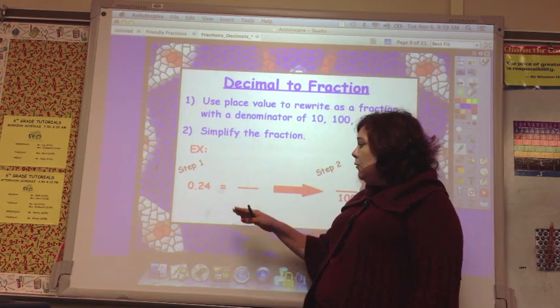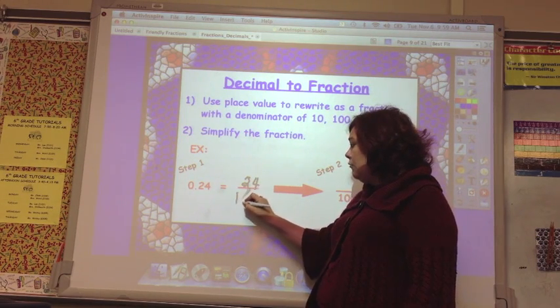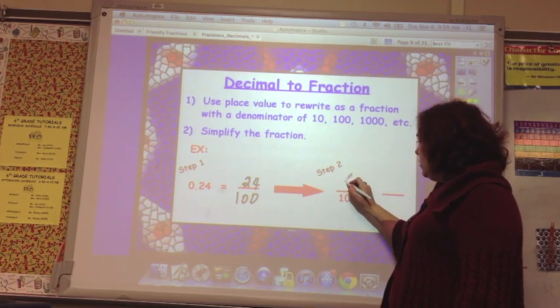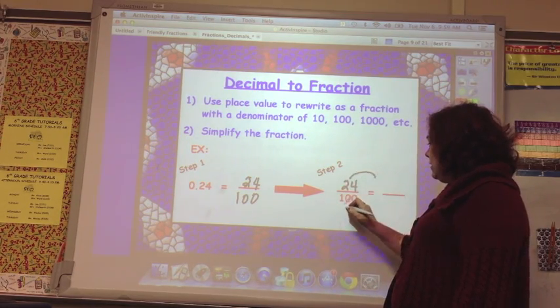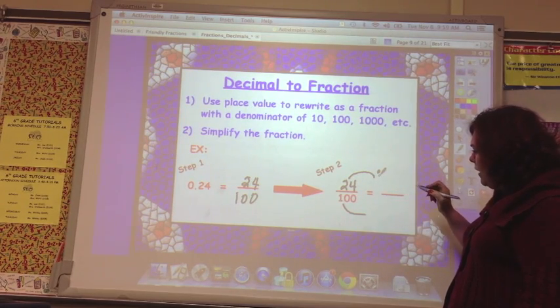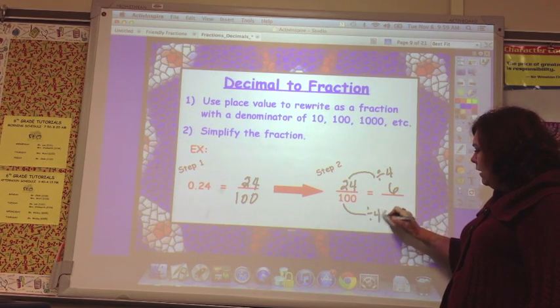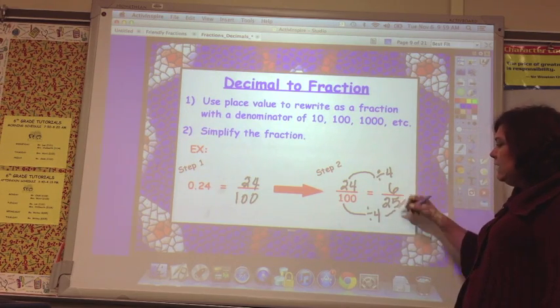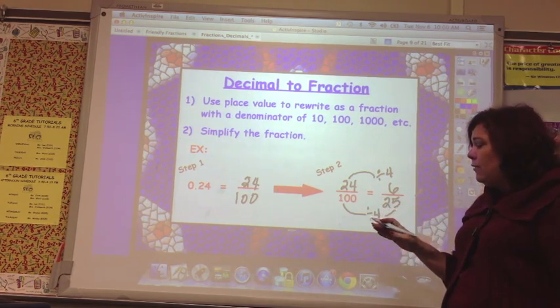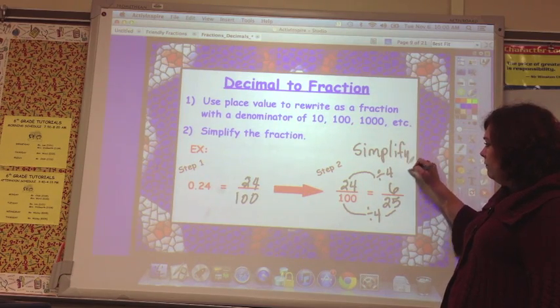So an example of this would be 24 hundredths. So you'd write that as a fraction, 24 hundredths. Because this is in the hundredth spot, so you say 24 hundredths, the same as 24 over 100. So you take 24 over 100, and you're going to simplify. And let's see. This simplifies by 2. Oh, actually by 4. Divide by 4, I get 6. And divide by 4, I get 25. So 6 25ths. That is how I go from decimal to fraction. And so I write it using place value, then I simplify.